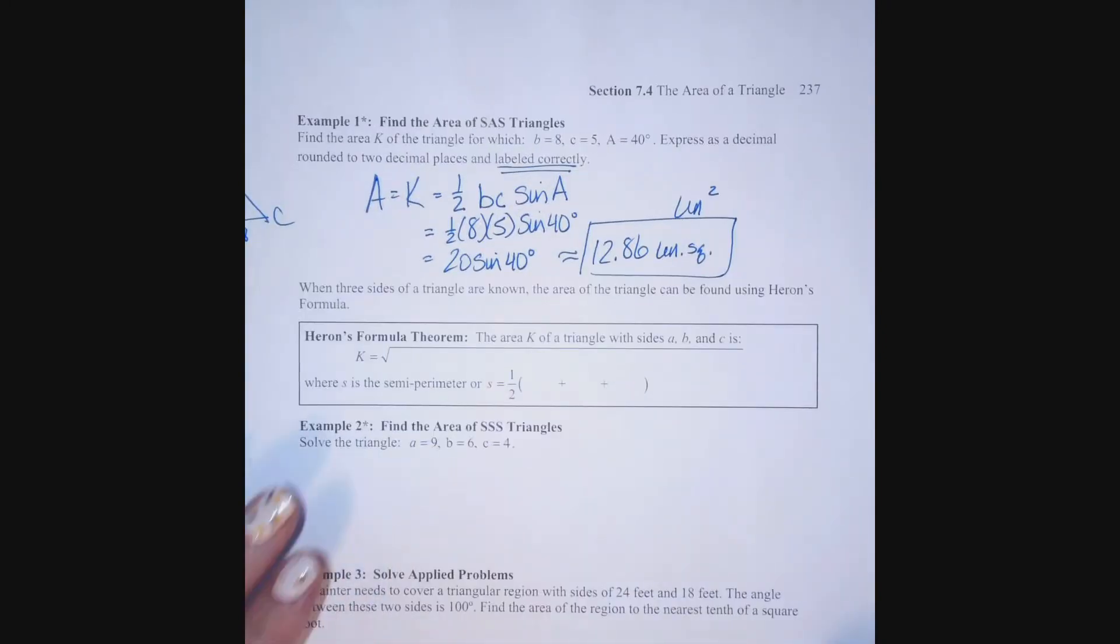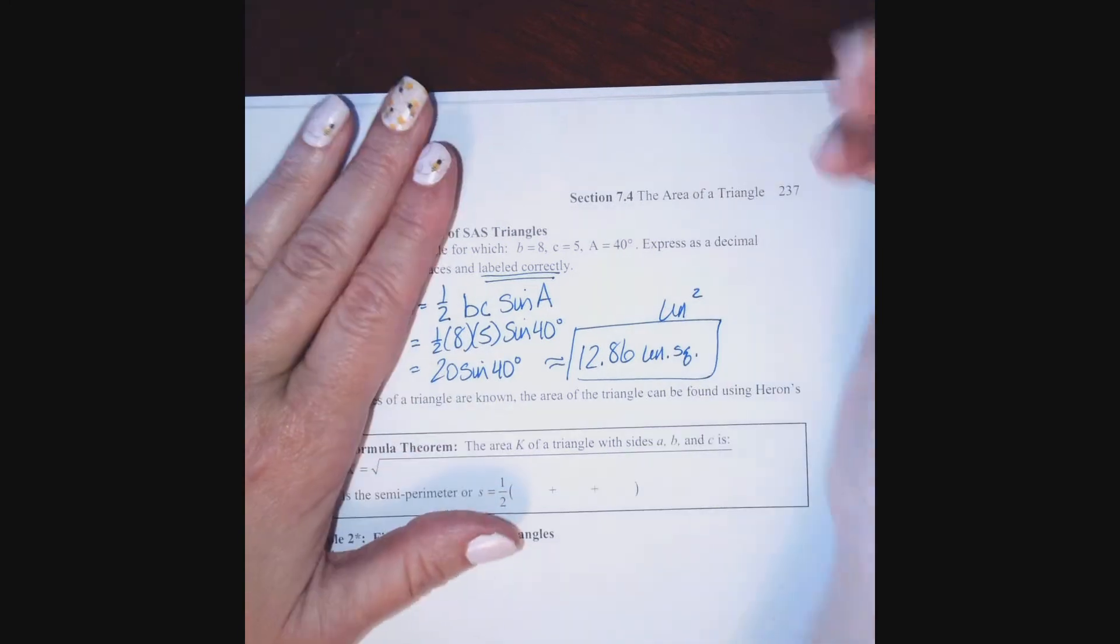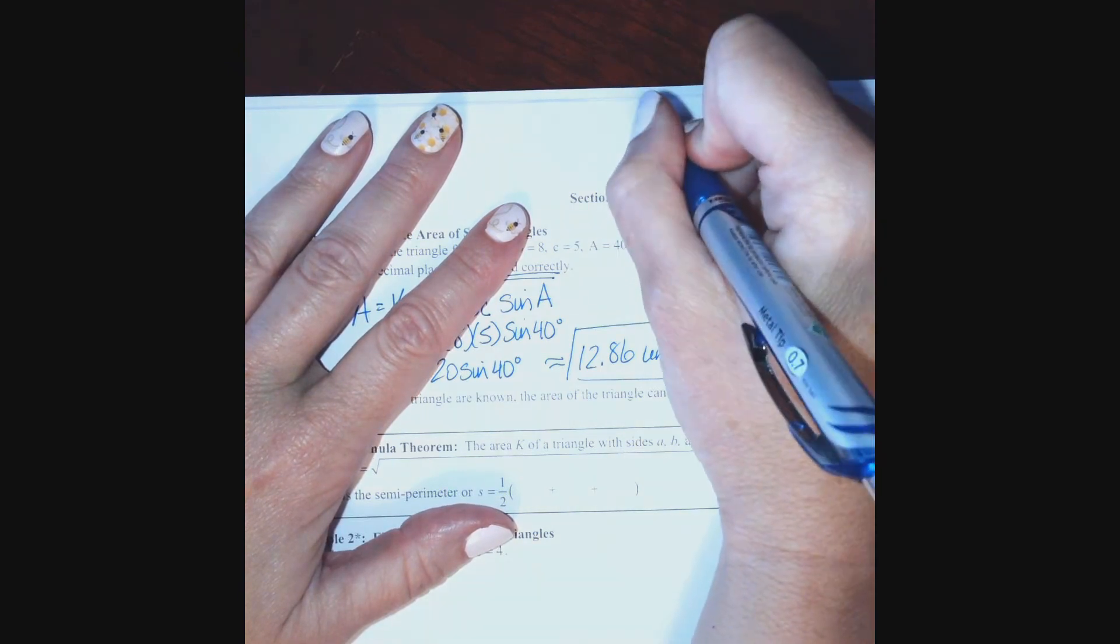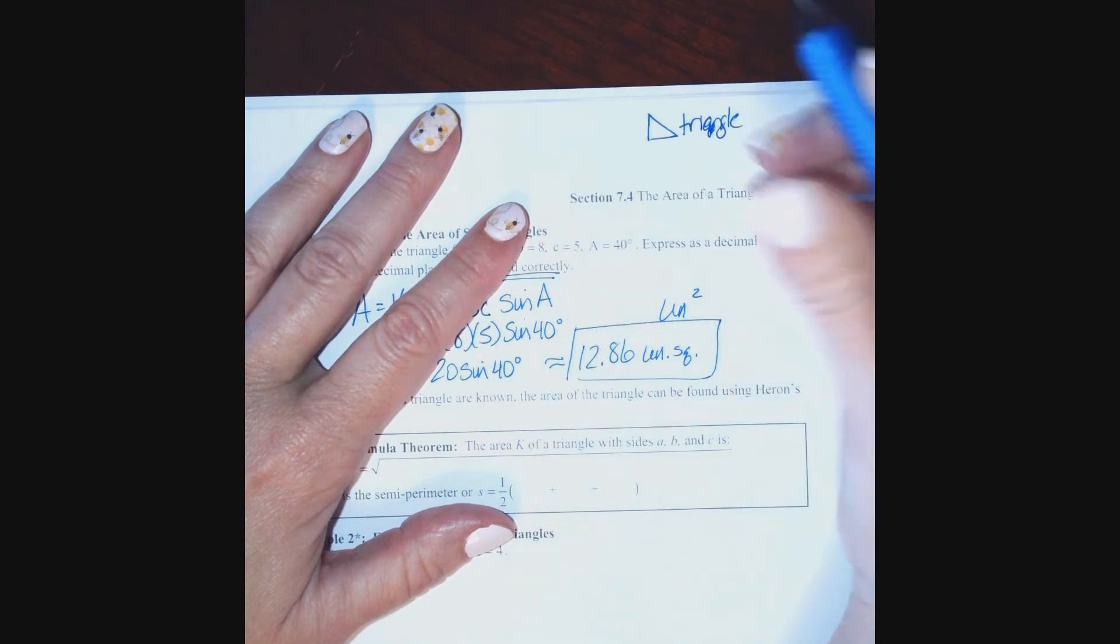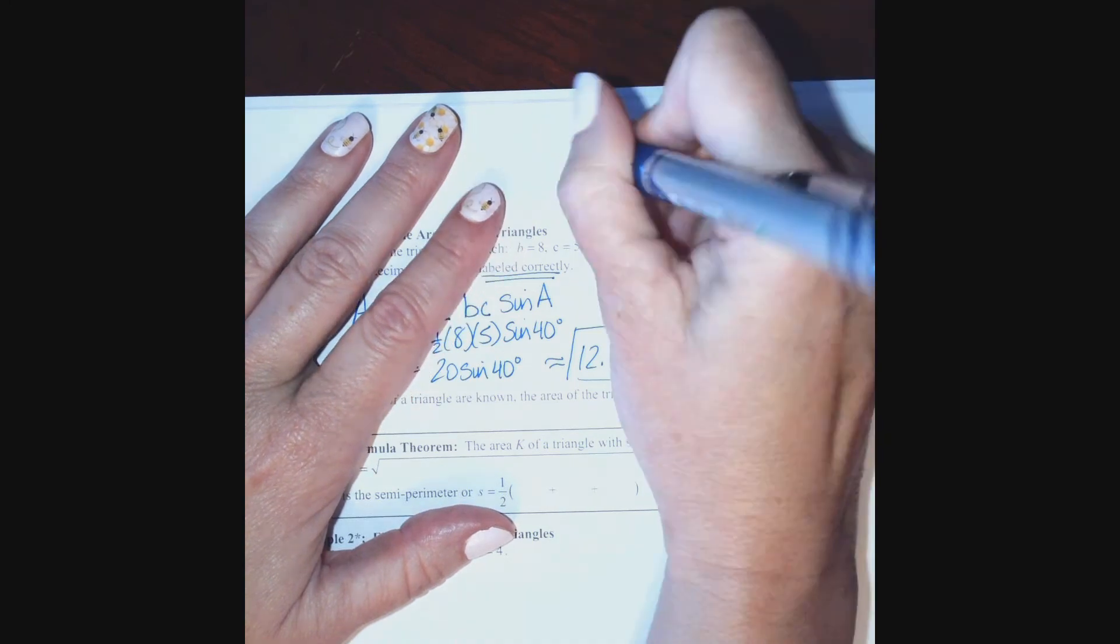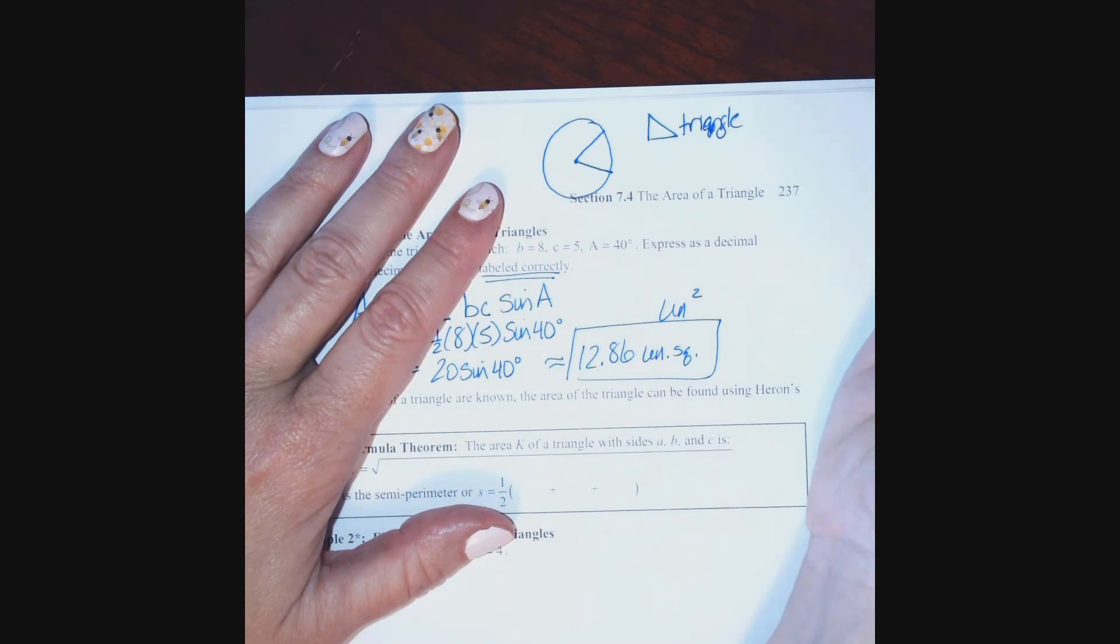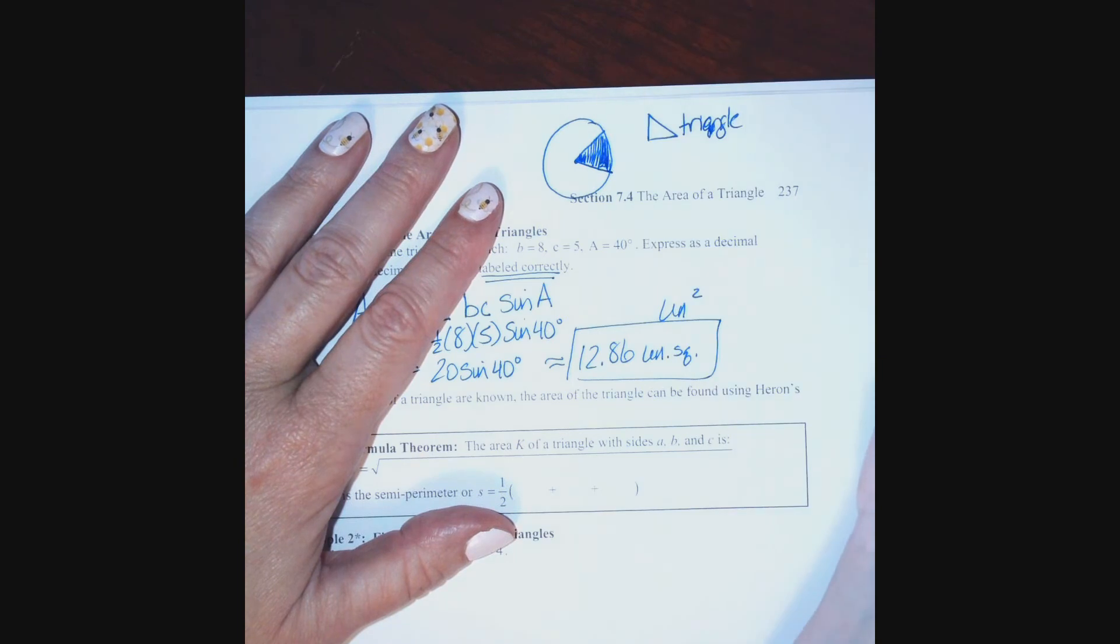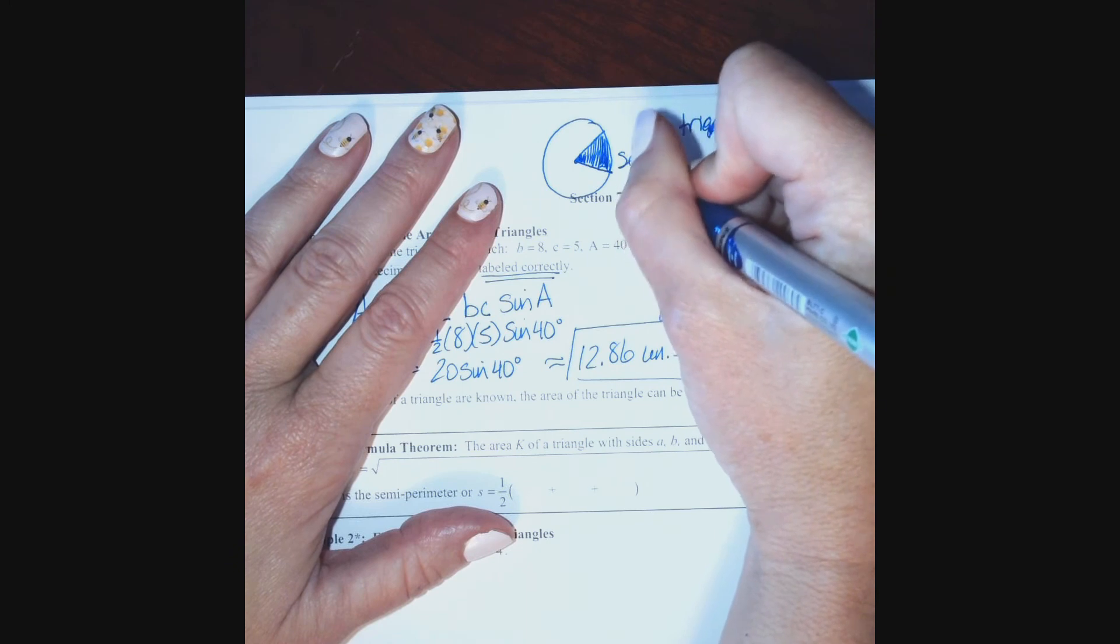Just, we're going to stop an aside before we do Heron's formula. I want to give you a couple of definitions really quickly. When we are talking about area of a triangle, with some of your application problems, there are some other areas that you're going to find. Triangle, you're good with. A sector of a circle. If you have a circle, a sector of a circle is the area found between two radii, or two rays on the circle. This is a sector of a circle. It looks like a shape, like a pizza.